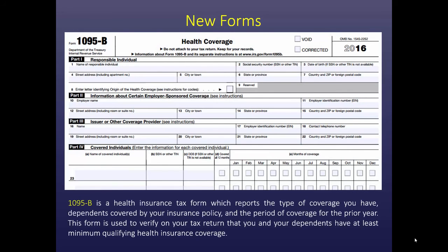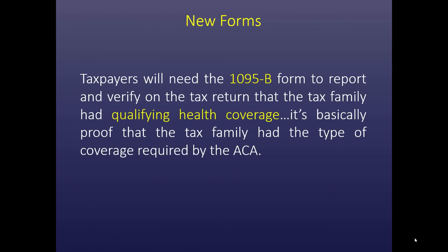Now we have some new forms relating to the Affordable Care Act. Form 1095-B is a health insurance tax form that reports the type of coverage that you or your client has, dependents covered by the insurance policy, and the period of coverage for the prior year. This form is used to verify on the tax return that you and your dependents have at least minimum qualifying health insurance coverage. We don't attach this 1095-B to the tax return — this is kept for client records. Taxpayers will need this 1095-B to verify that the tax family did indeed have qualifying health coverage, basically proof that the tax family had the type of coverage required by the Affordable Care Act.